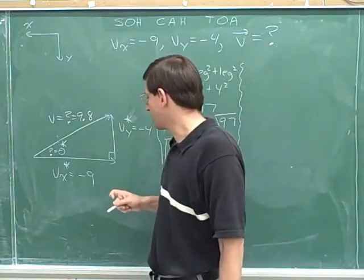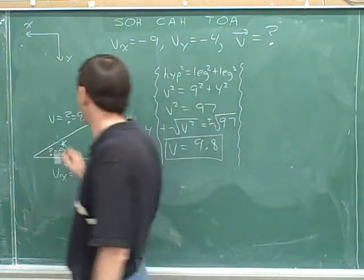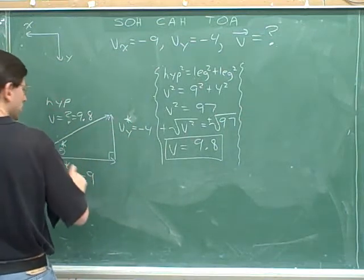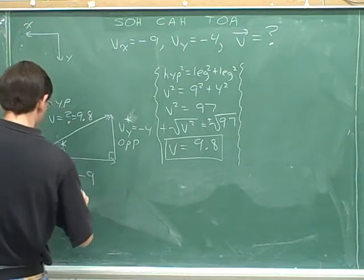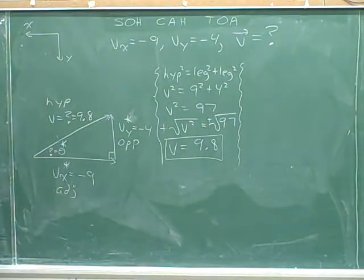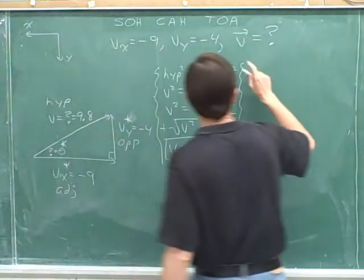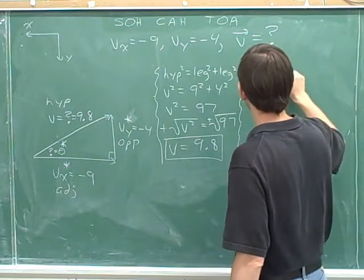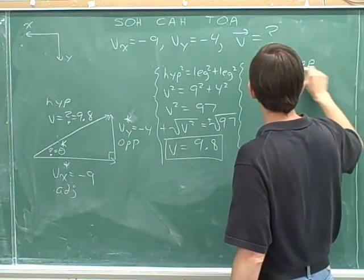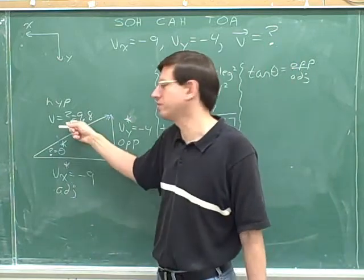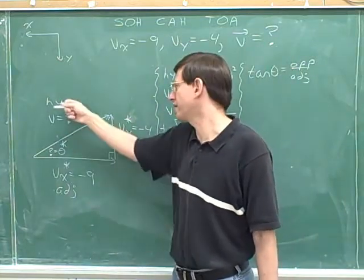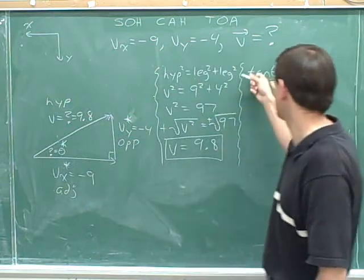We're going to use the sides, the components that we were originally given. Well, we were given the opposite and adjacent sides, which leads us to use the tangent, TOA. Tangent of theta is opposite over adjacent. You couldn't use sine or cosine now because we do know the hypotenuse. But we didn't know the hypotenuse originally, so it's more usual to use the tangent.